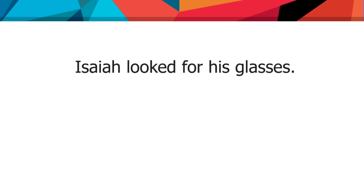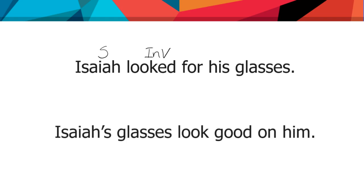Another example: 'Isaiah looked for his glasses.' There's no object there, but it is action — it's something that Isaiah is doing — so it's a subject–intransitive verb pattern. But if you said 'Isaiah's glasses look good on him,' glasses is the subject, look is the verb, but good describes glasses — so that's again a predicate adjective. The same word look, or a form of that verb, is acting as a linking verb in that sentence.